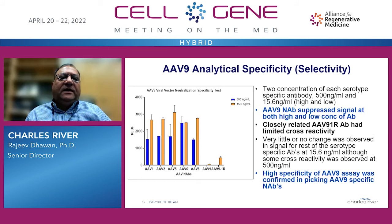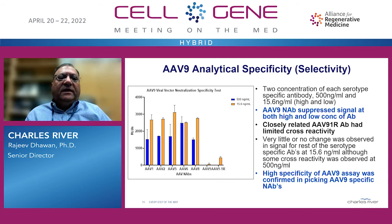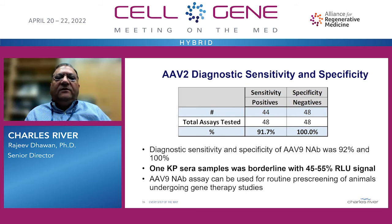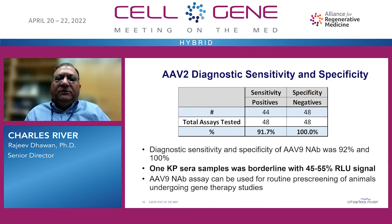However, for AAV9, at higher concentration — 500 ng/mL — we observed some cross-reactivity, including with AAV8 and AAV1. So although AAV9 is specific in picking up AAV9 neutralizing antibodies, some cross-reaction may occur at higher concentrations. Overall, diagnostic sensitivity and specificity were 92% and 100% respectively. One known positive sample was borderline between 45–55% RLU signal, which caused sensitivity to drop slightly. Overall, signal scores between the two technicians were very similar for individual samples across three runs, confirming high reproducibility.